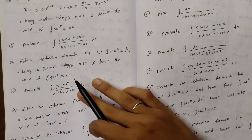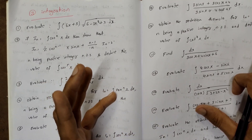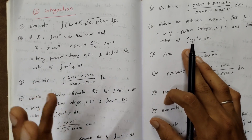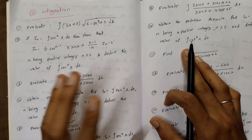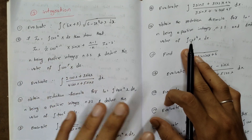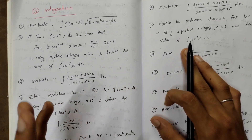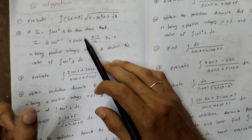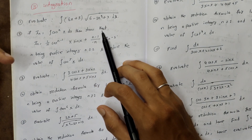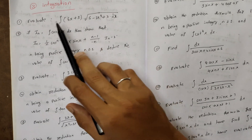Next, integration. You can refer to a separate integration video for reduction formulas. There are 7-mark integration questions. The first very important question: evaluate integration of (6x+5)√(6-2x²+x) dx.